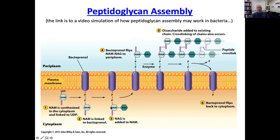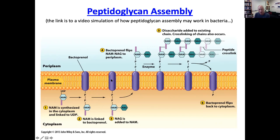Understanding how peptidoglycan is made is important because it is the target of many antibiotics that kill bacteria. The subunit is built inside the cell, in the cytoplasm, right after this third step. You can see it is attached to a carrier molecule — this is the bactoprenol.